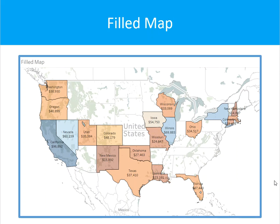A fill map — similar to the symbol map discussed previously. However, instead of symbols, you can add color to fill the geographical region in order to tell the story. You can see that the colors are within the borders of the state. You can play with color, transparency, and borders to enhance your visual. A geo-dimension is required. A fill map is really a great visual when you're working with geographical data. Minimum requirements are one geographical dimension, zero or more dimensions, and zero to two measures.